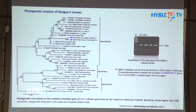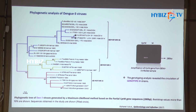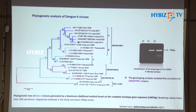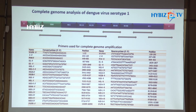We then went further to identify the genotype of each serotype. For serotype 1, it was genotype 3; for serotype 2, it was genotype 4; for serotype 3, it was genotype 3; and for serotype 4, it was genotype 1. Identification was thus carried out down to the genotype level. We then performed complete genome sequencing of three serotypes — serotypes 1, 2, and 4 — as we could not complete serotype 3.